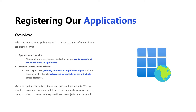When we think about the definition of an application, we have to keep in mind that a lot of things can be done with that application. It can access different resources, and more importantly it can define things like how it should be accessed. So what we're really talking about with the application object is what's important to the application when it comes to accessing different resources — for example, can my web app access my database application? Additionally, we need to define what information we need from the user in order to use our application.